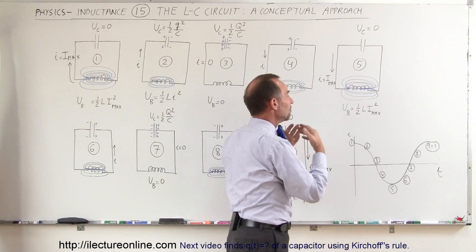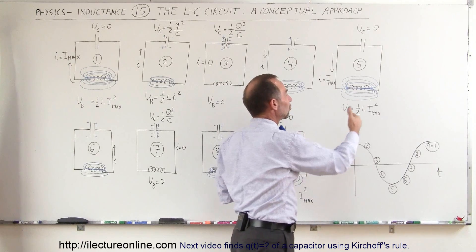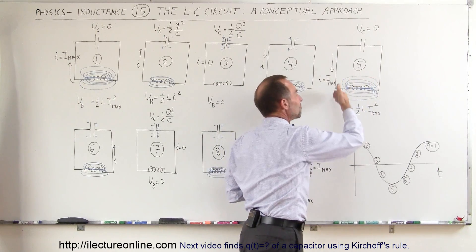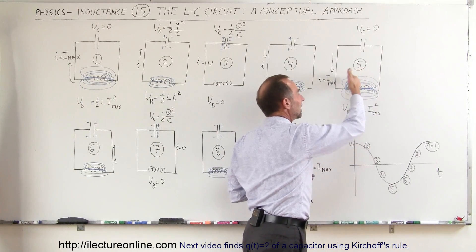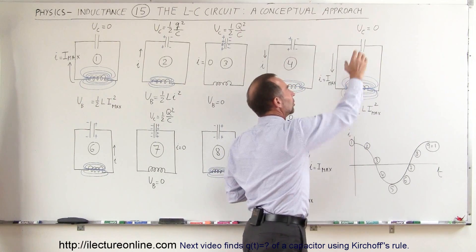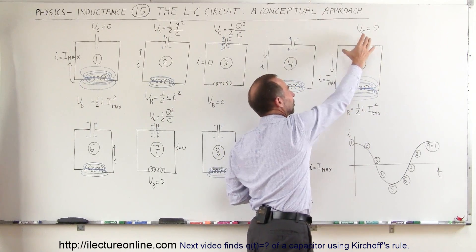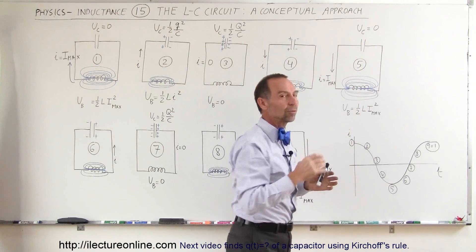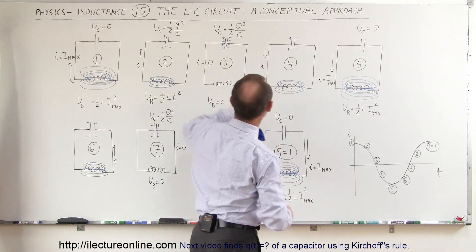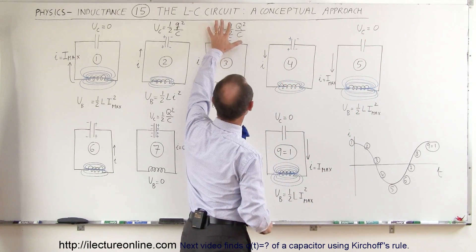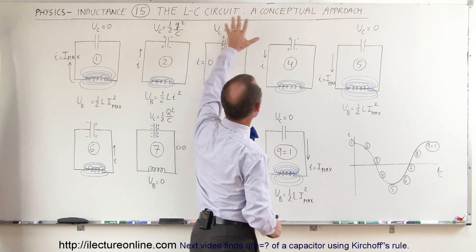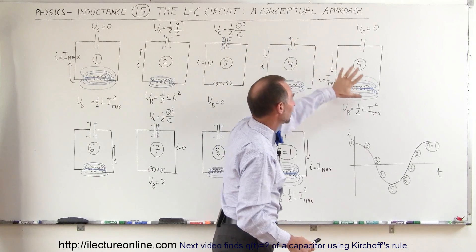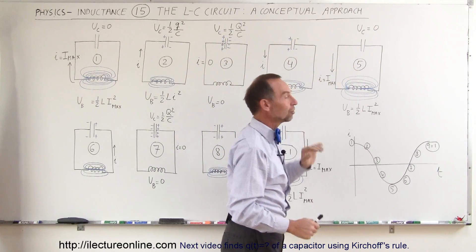The maximum current is reached. Therefore, we now have maximum energy in the inductor. The capacitor has zero energy and the inductor now has maximum energy — all the energy that was in the capacitor has now transferred into energy in the inductor.